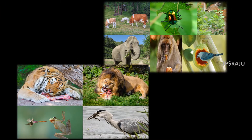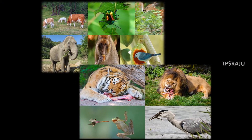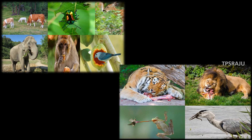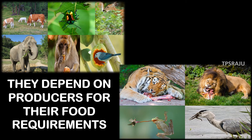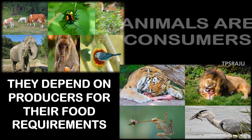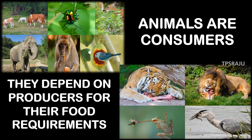Animals can't prepare their food on their own. They depend on producers for their food requirements. They consume producers as food. So animals are called as consumers.